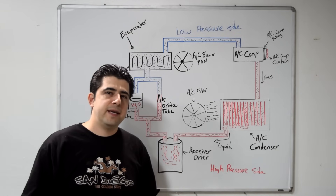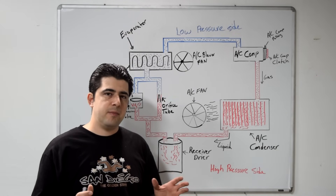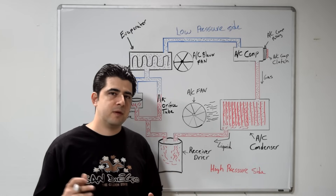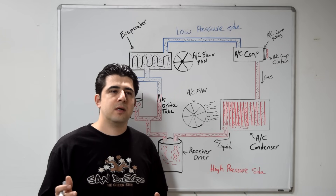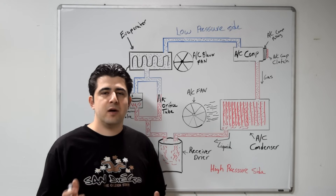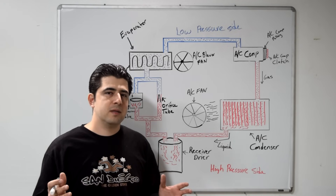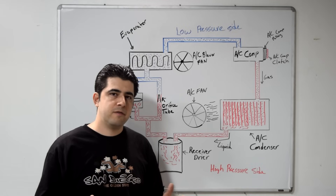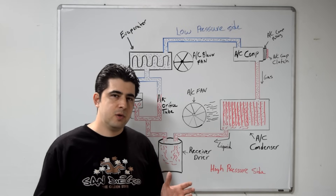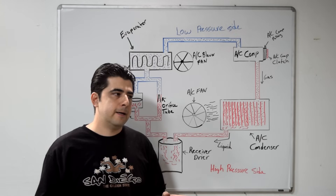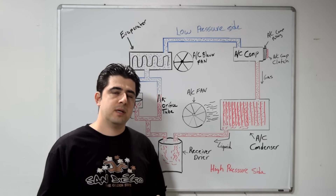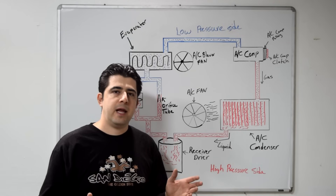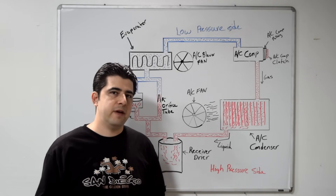Your AC system is a closed system, meaning it is never supposed to be open to atmospheric pressure. The problem is that a lot of times you develop small and large leaks which open it to atmospheric pressure, and when that happens you usually end up losing refrigerant. When you lose enough refrigerant, your AC pressure switch disables your AC compressor and you won't get cold air coming out of your vents.